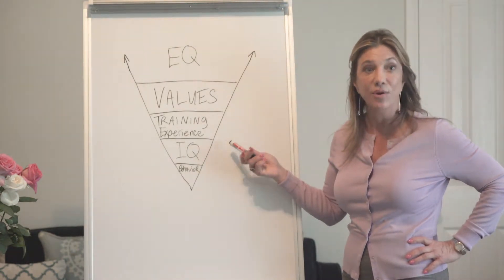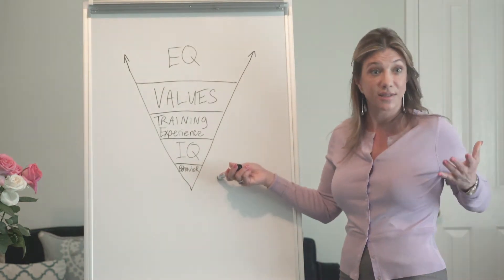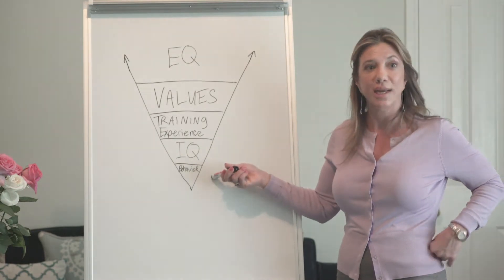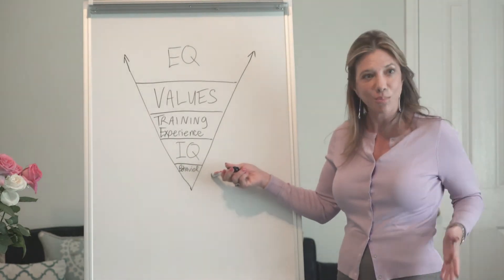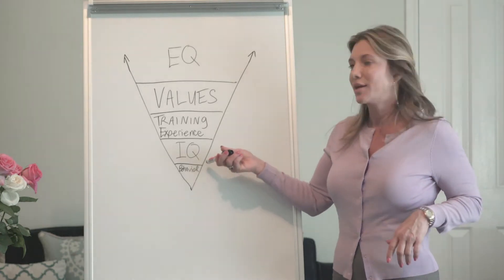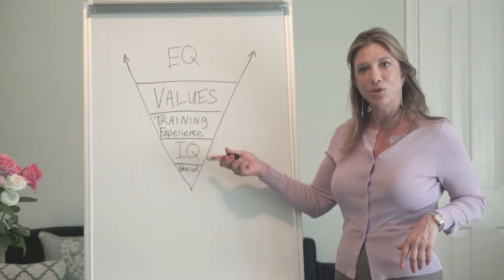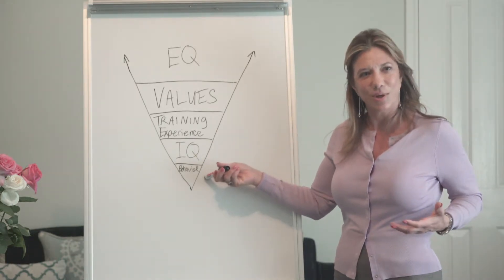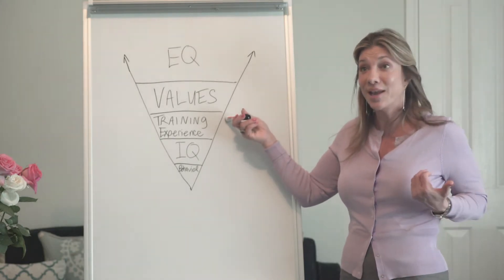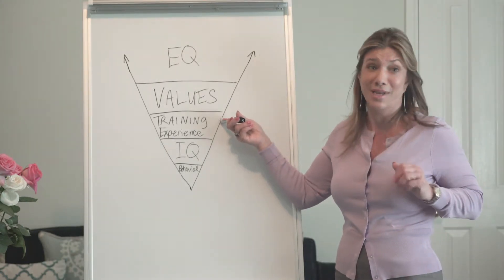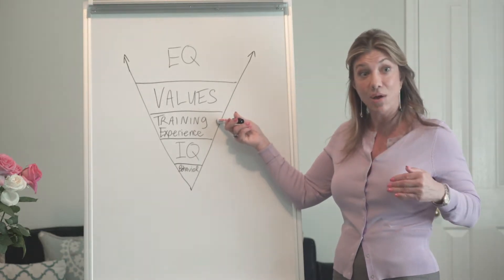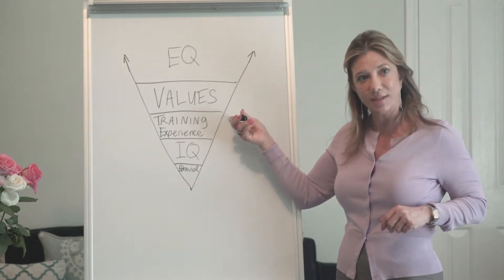Intelligence trumps behavior. If you take DISC for example, there is nothing worse than a dumb D — someone who doesn't understand they're a bull in a china shop and shouldn't point their finger at someone or call names or be really aggressive. When you're smart, you learn when your behavior works and when it doesn't. Training and experience also trump behavior. My behavior assessment says I'm a horrible time manager, yet I work by my schedule from hour to hour every day, all day long — and that has to do with my training and experience.